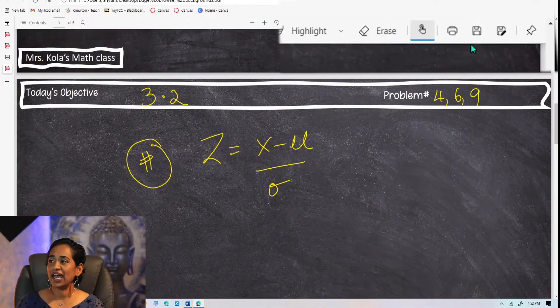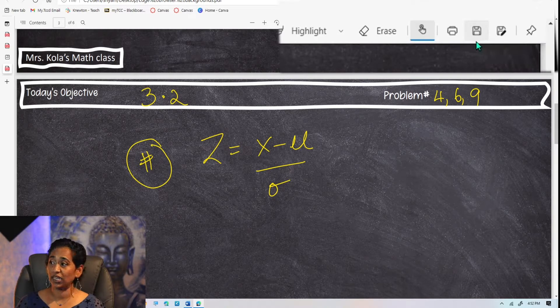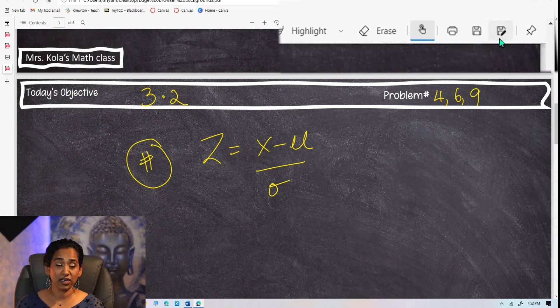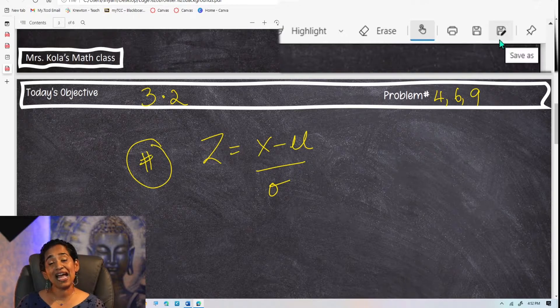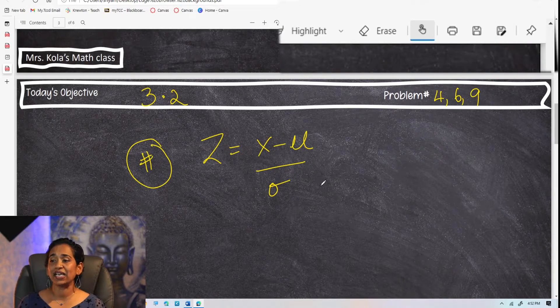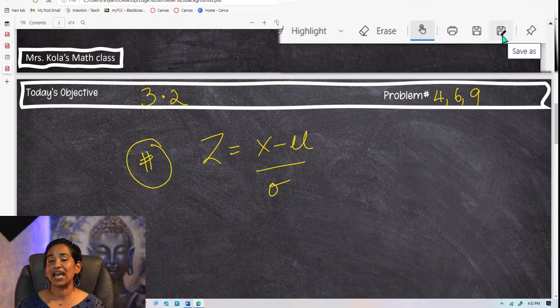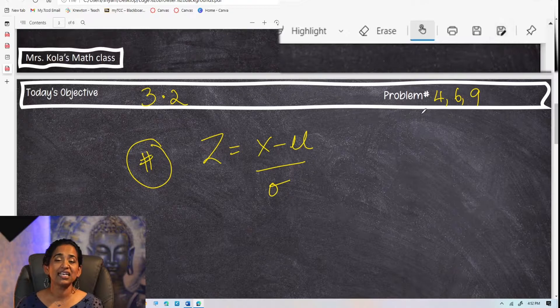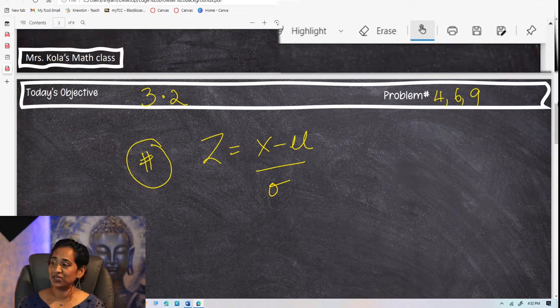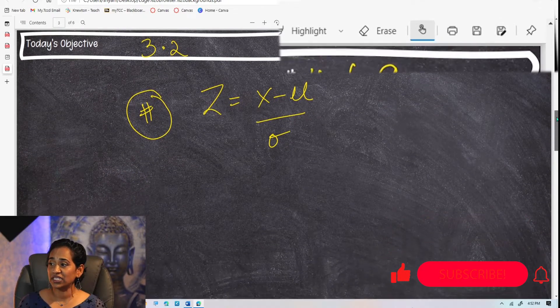And as you can see, I have a save button as well. I can save this entire document, or I can save it as. What I do is I create blank blackboard documents for myself, and every class, I save it as that day of the class, so I can just email it to my students.